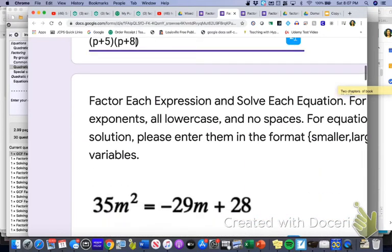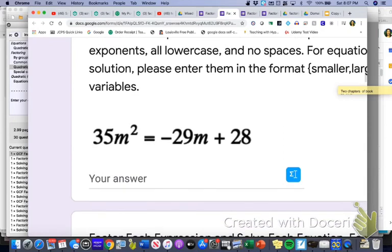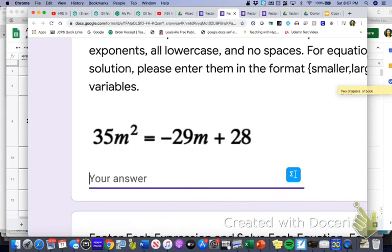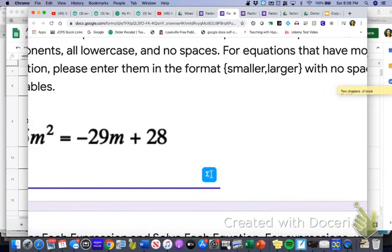And then last but not least, for the third one that we did, we got the two solutions, negative 7 over 5 and 4 over 7. So make sure you do it just like it asks you to here in the directions, where it says do the smaller one first, the larger one second with those brackets on either side. So I'm going to do the bracket, negative 7 over 5, comma in between, and then 4 over 7 and the bracket.